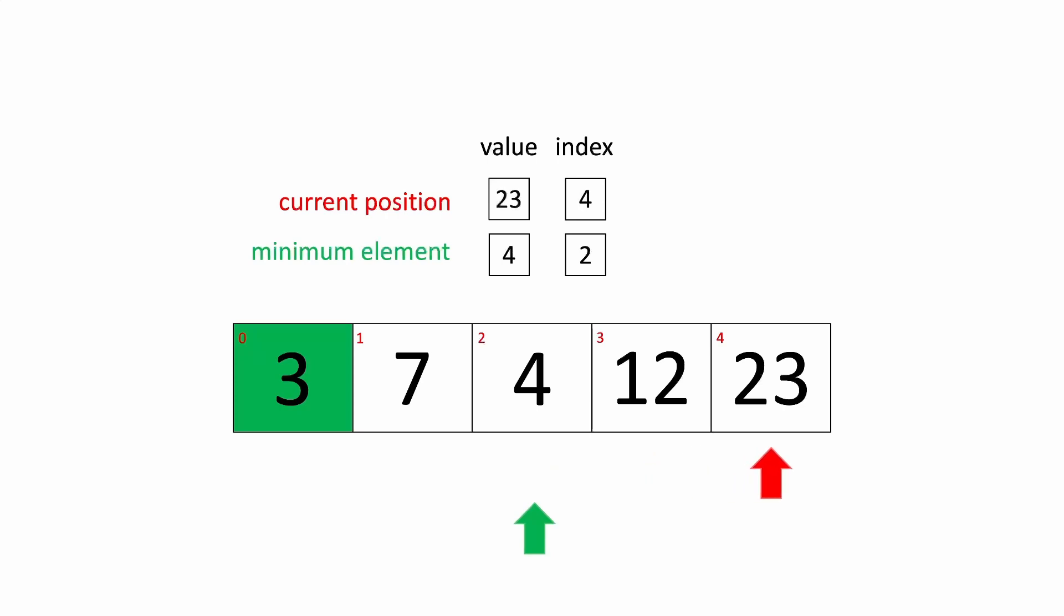Now, is 23 less than 4? It isn't, which means the minimum element in this iteration is 4, and we need to swap it with the next available position in the array, which is index 1. So we're going to perform a swap. 4 is in the correct position, and we get ready for the next iteration.